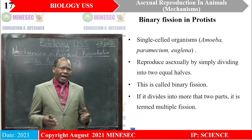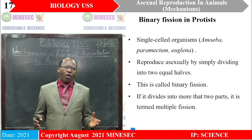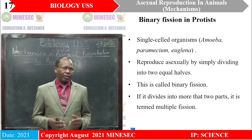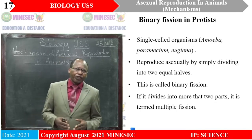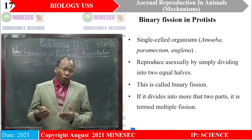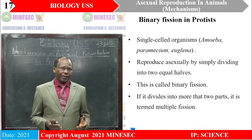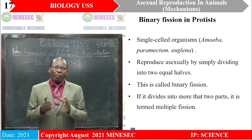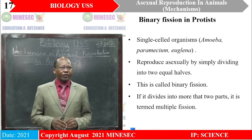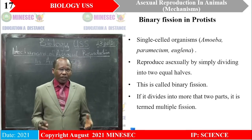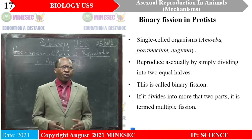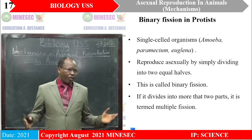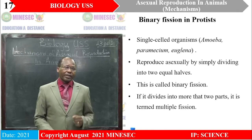Taking binary fission as our first example — this is so-called because it means two. It takes place in single-celled organisms such as amoeba and paramecium. During binary fission, these mother cells reproduce asexually simply by dividing into two equal halves. This is called binary — 'bi' standing for two. If this division is into more than two — three, eight, or whatever number — it is called multiple fission. Multiple fission means it can be any number, depending on the favorable conditions provided for those cells to divide.